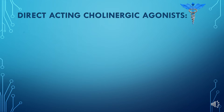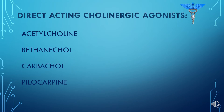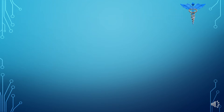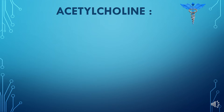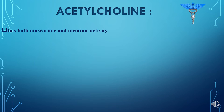Here are the drugs that are direct-acting cholinergic agonists — they bind directly to the cholinergic receptors, either muscarinic or nicotinic. The first cholinergic agonist we will discuss is acetylcholine itself, which is a direct-acting cholinergic agonist. It shows both muscarinic and nicotinic activity, meaning it can bind to both types of receptors.